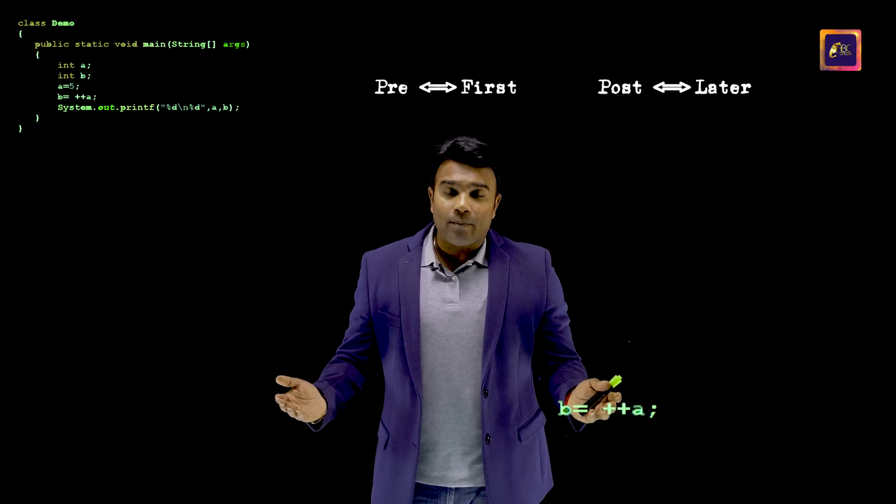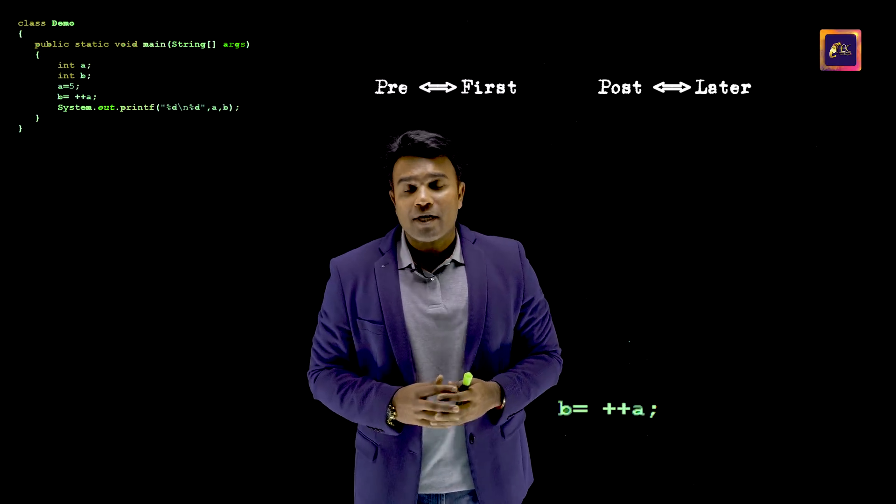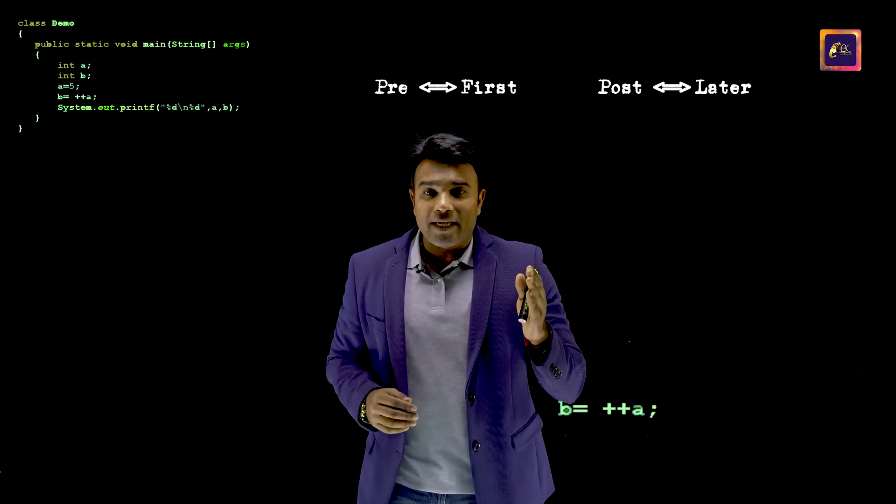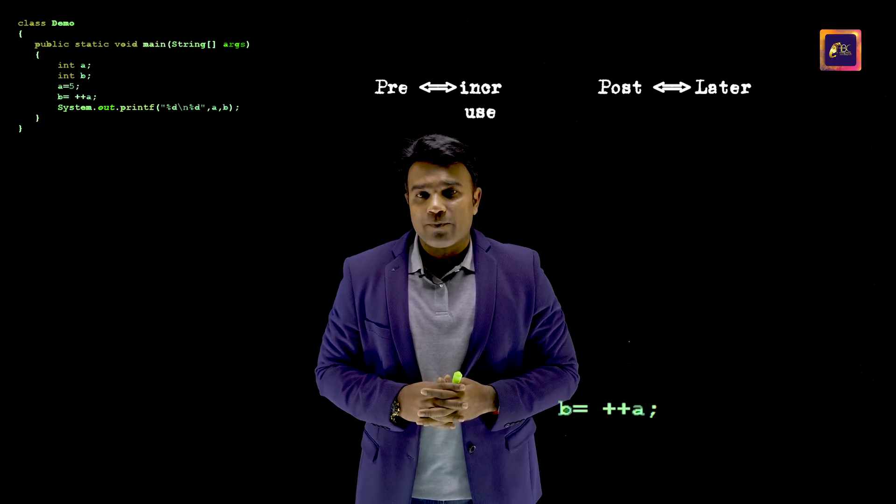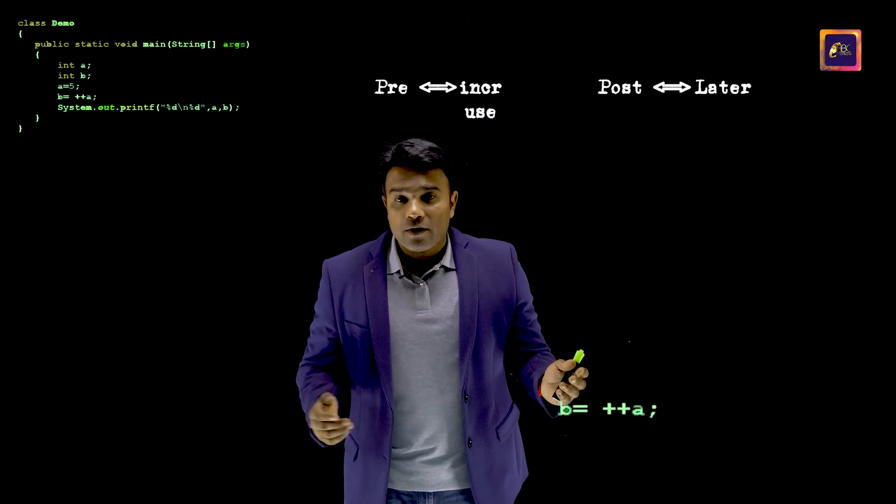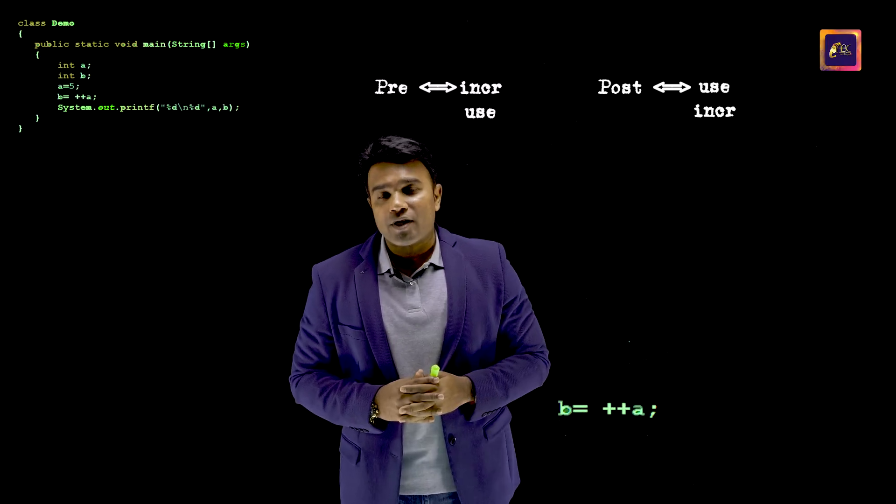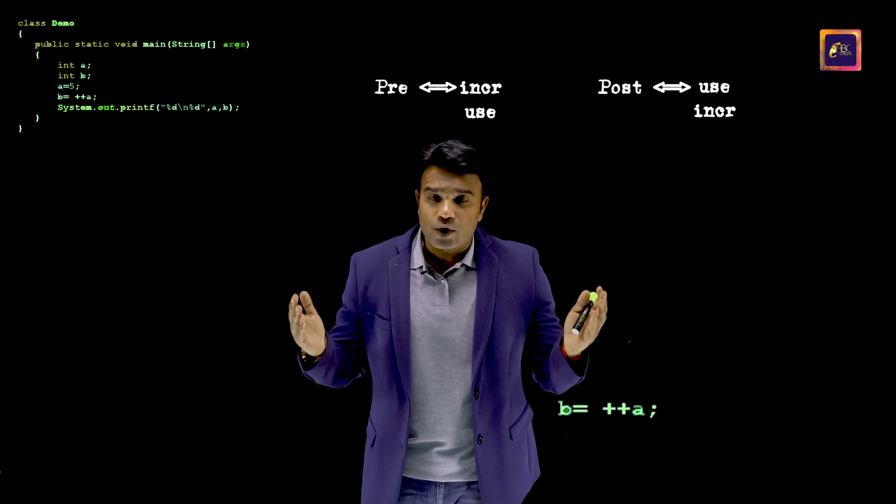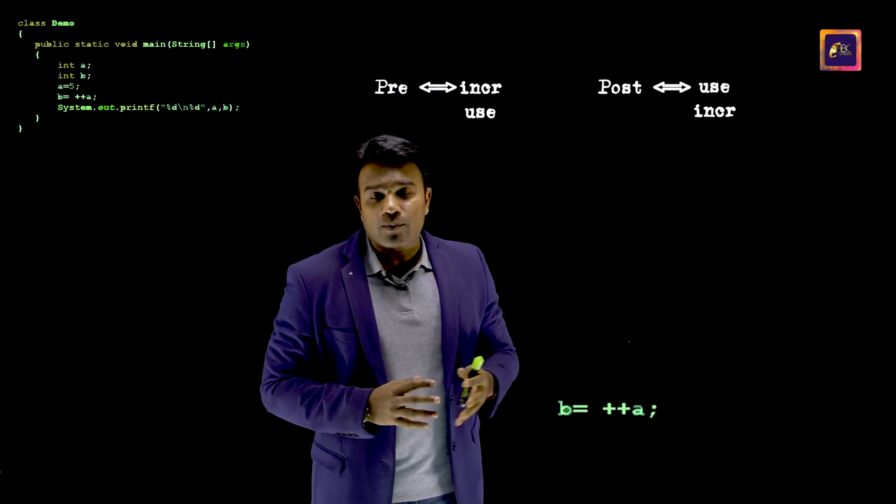Now, in programming, particularly with respect to incrementation and decrementation operators, what pre and post really means is that pre means we are going to increment first and then use the value later. Whereas in case of post, we are going to use the value and then do the incrementation later. This is the point that one needs to know in order to evaluate any such expression.